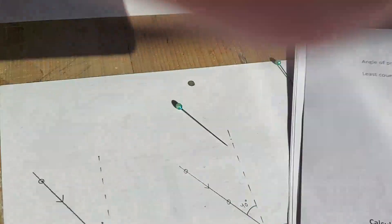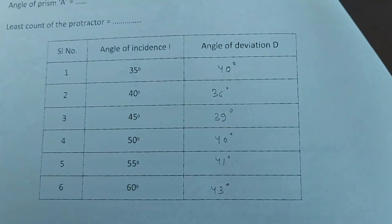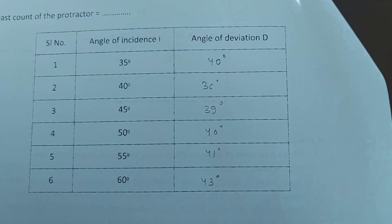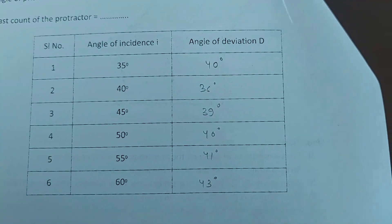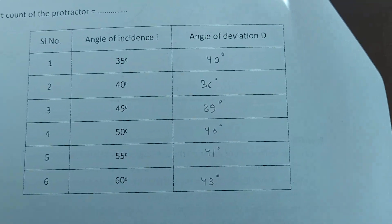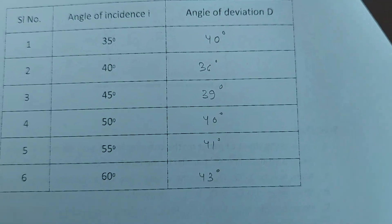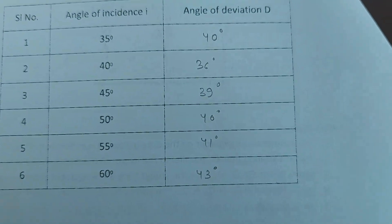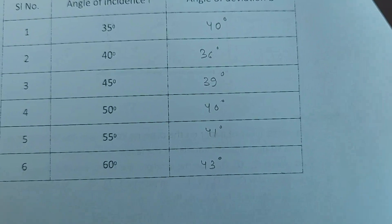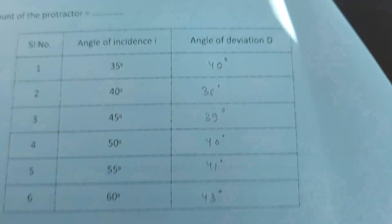The observation table shows that gradually the angle of deviation is decreasing and then starts increasing again. At 35, it is 40. At 40, it is 36. At 45, 39. At 50 degrees, 46. At 55, 41. And 60 degrees, 43 degrees.